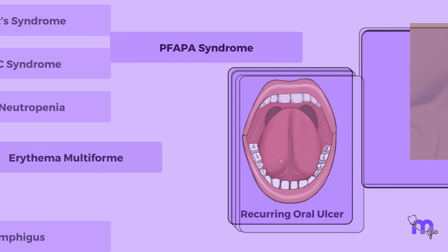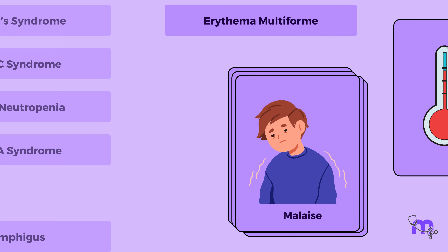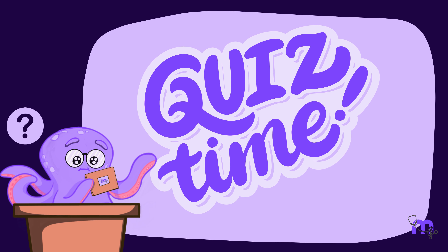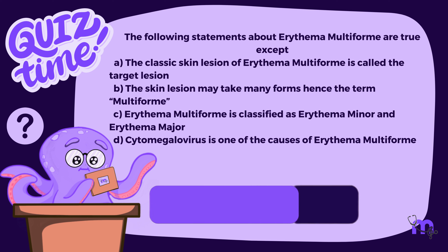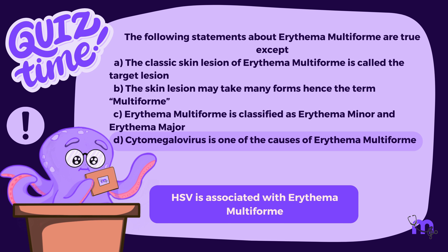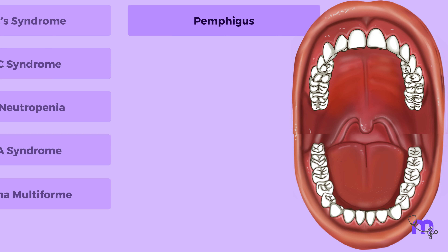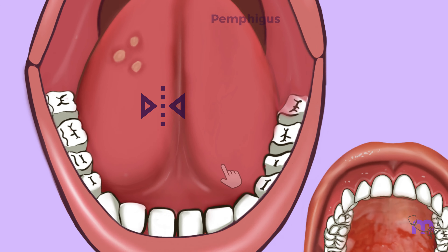Next on the list was Erythema multiforme. This ulcerative condition can be preceded by symptoms like fever, malaise, headache, sore throat, rhinorrhea, and cough. The last on the dentist's list was Pemphigus. Unlike RAS ulcers, which heal in a couple of weeks and recur, Pemphigus lesions progressively enlarge over weeks or months. Additionally, RAS ulcers are typically round and symmetrical, while Pemphigus lesions are not. By carefully examining for these possibilities, the dentist could confidently diagnose Maya's condition.